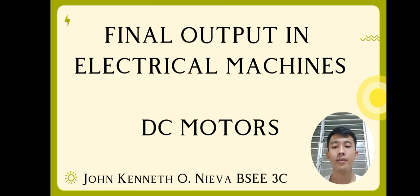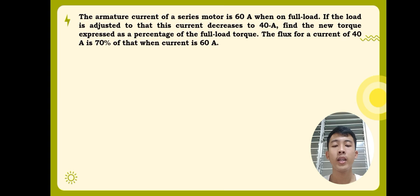Without further ado, I will now start. For the first problem, the armature current of a series motor is 60 amperes when on full load. If the load is adjusted so that this current decreases to 40 amperes, find the new torque expressed as a percentage of the full load torque. The flux for a current of 40 amperes is 70% of that when current is 60 amps.